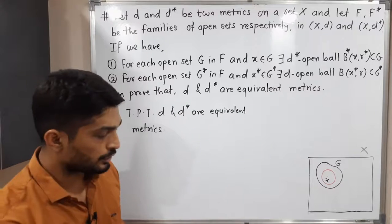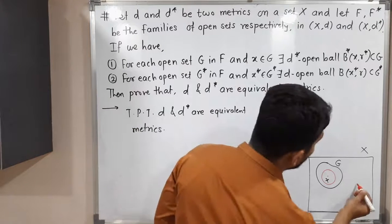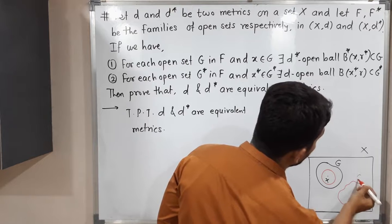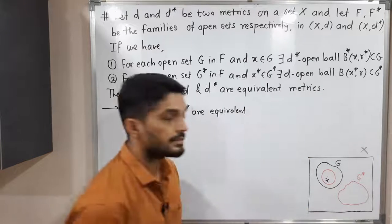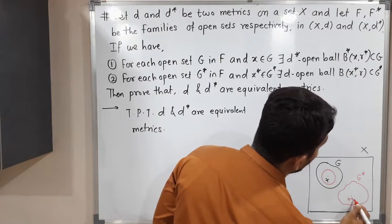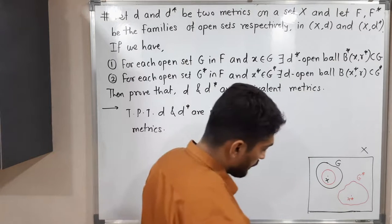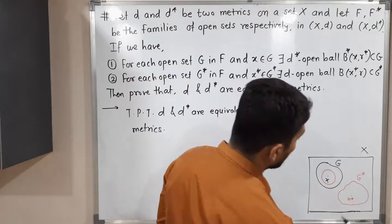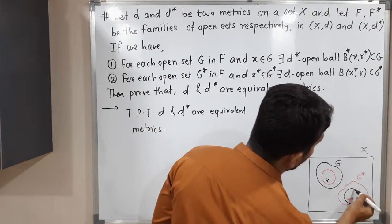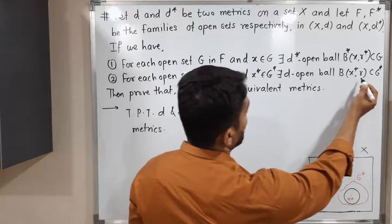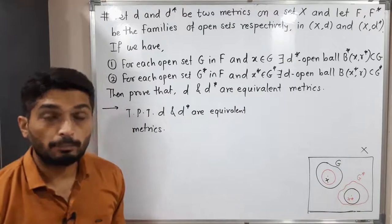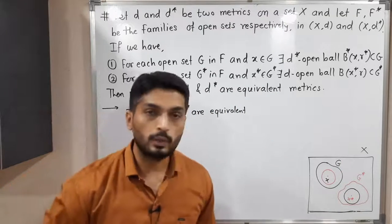The second piece of information is: if you have any D*-open set — let me show it by G* — and if you have any point x* belonging to G*, then we can definitely find one D-open ball B(x*, r) which is a subset of G*. This is the important information given to us.